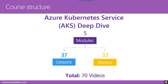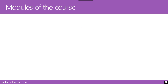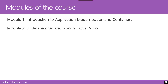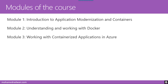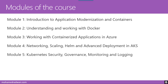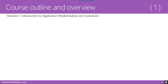The course has five modules. Module One is Introduction to Application Modernization and Containers. Module Two is Understanding and Working with Docker. Module Three covers working with containerized applications in Azure. Module Four covers Networking, Scaling, Helm, and Advanced Deployment in AKS. Module Five covers Kubernetes Security, Governance, Monitoring, and Logging.